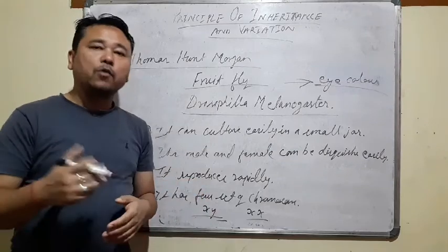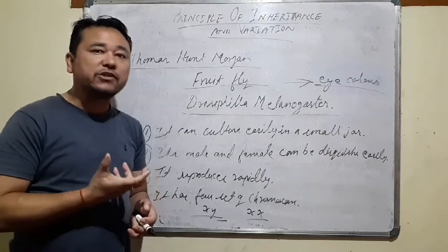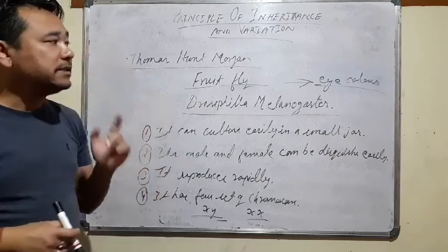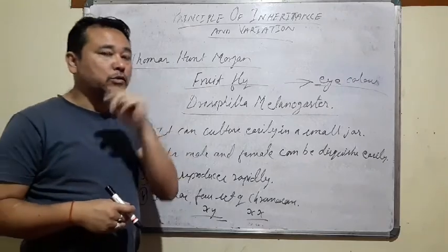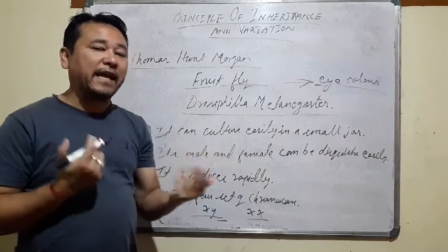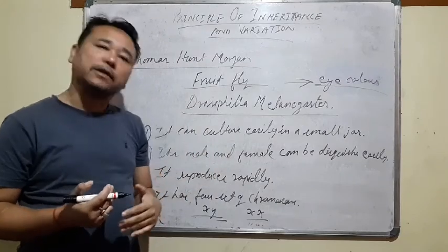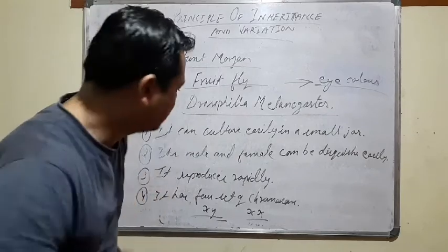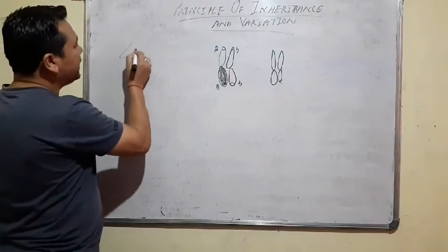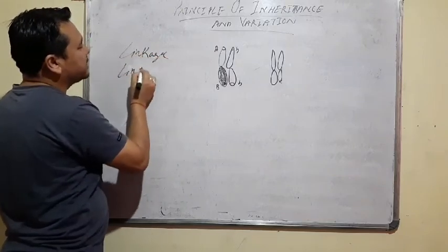Now we will learn about linkage and recombination. After that we will learn that Morgan did two types of cross — Cross A and Cross B. What are the differences between Cross A and B? Now we will learn about linkage.